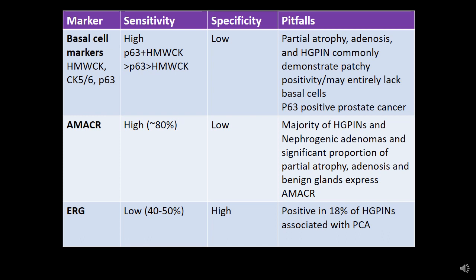High-grade PIN, the majority of nephrogenic adenomas, and significant proportions of partial atrophy and adenosis can express AMACR — so this is not specific to prostate cancer. ERG is a newer marker in the toolbox that is highly specific for prostate cancer but has much lower sensitivity. So far it has not been detected in any benign mimics of prostate cancer, but because of its low sensitivity it is not widely utilized for prostate cancer diagnosis, particularly in the needle biopsy setting.